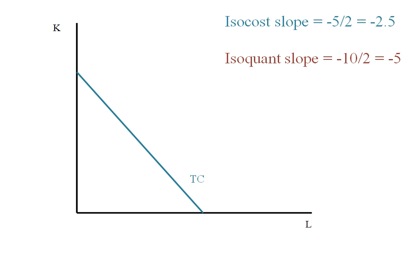I can graph this, so labor on the x-axis, capital on the y-axis. The isocost curve has a slope of negative 2.5, and the isoquant has a slope of negative 5. So if I put on my isocost, my total cost line, I want to make sure my isoquant is steeper.